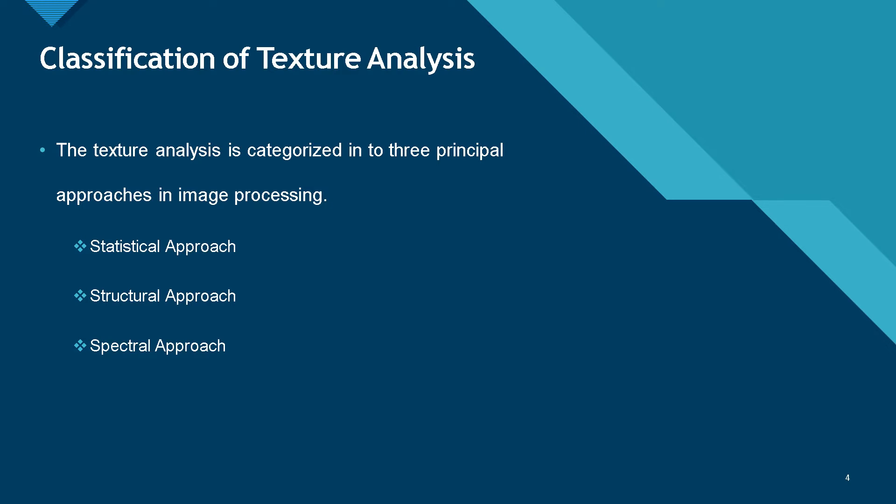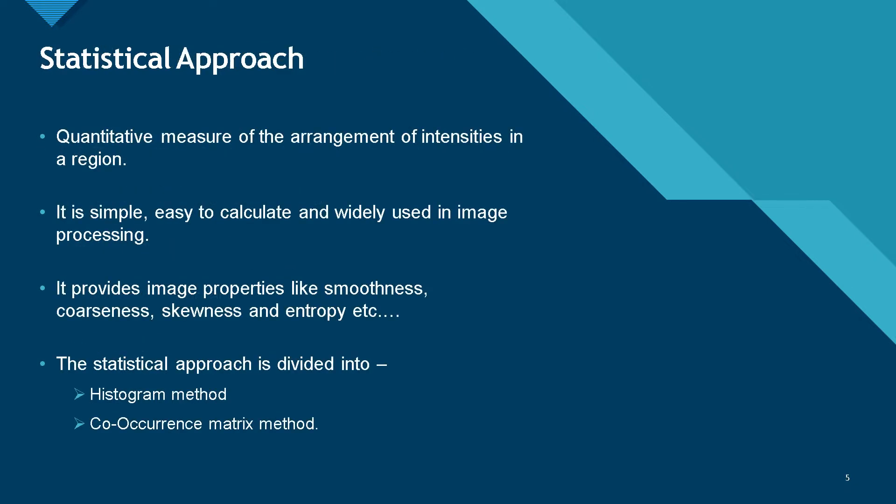Now, let's go to the classification of texture analysis. The texture analysis is classified into three parts: statistical approach, structural approach, and spectral approach. Let's go to the statistical approach. Statistical approach is a quantitative measure of arrangements of intensities or pixel gray values in a region. It provides image properties like smoothness, coarseness, skewness, entropy, etc. In this statistical approach, we have two different methods: histogram method and co-occurrence matrix method.